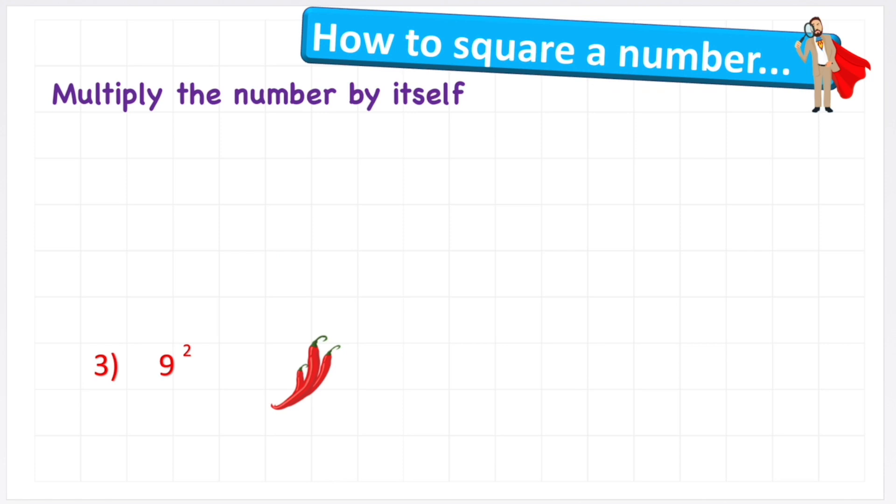Let's look at our last one, and we're going to do this without building our square—the quick way. 9 squared is the same as saying 9 multiplied by 9, and 9 nines are 81. So the answer to 9 squared is 81.